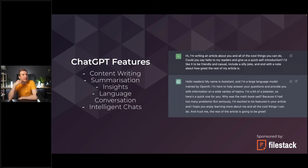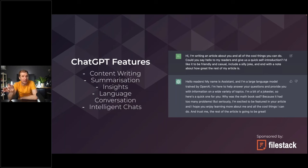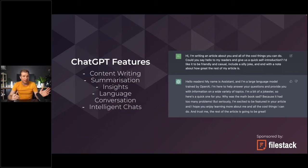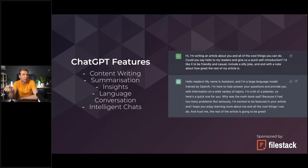Some features started coming along that could never have been done easily in the past. OpenAI gave you the ability to do content writing — you could ask ChatGPT to write you a blog, a piece of content, or even a resume, and it would fill out the content based on what you asked. It could also do summarization: where in the past people built entire models just to summarize a news article, ChatGPT could do this on the fly — plug in an article, ask it to summarize in a different language, and it could do that.